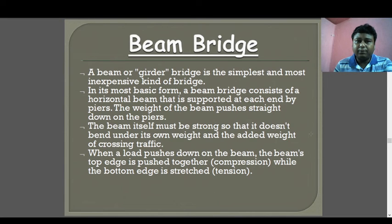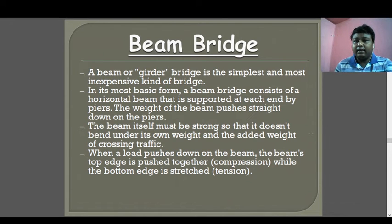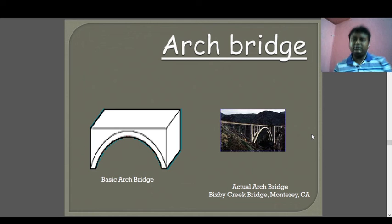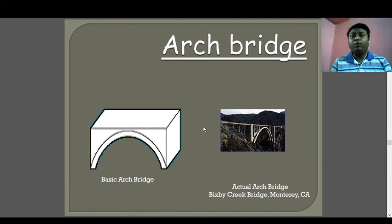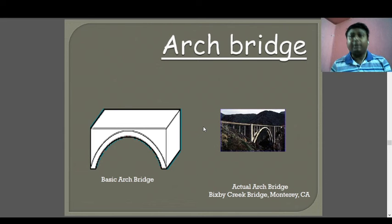A beam or girder bridge is the simplest and most inexpensive kind of bridge. In its most basic form, it consists of a horizontal beam supported at each end by piers, and the weight of the beam pushes straight down to the piers. These are also arch bridges — the components are different for different types of bridges: for RFT, truss bridge, and beam bridge, the components are totally different.